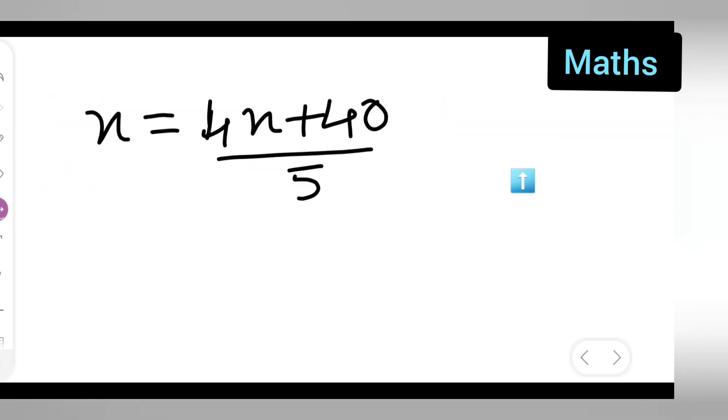5 is common among both, so what I'll do is I'll take this 5 here. So write down 5x equals, because cross multiplication, 4x plus 40 will remain.